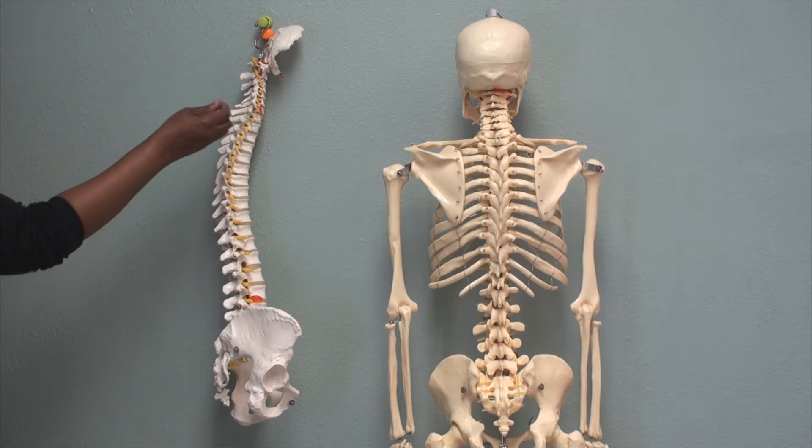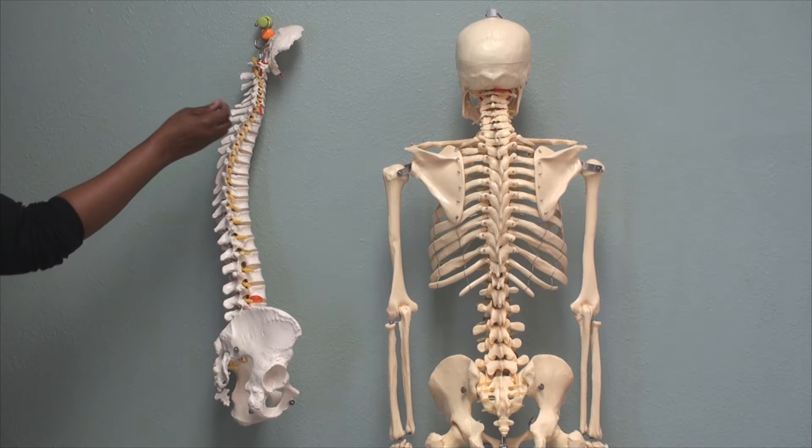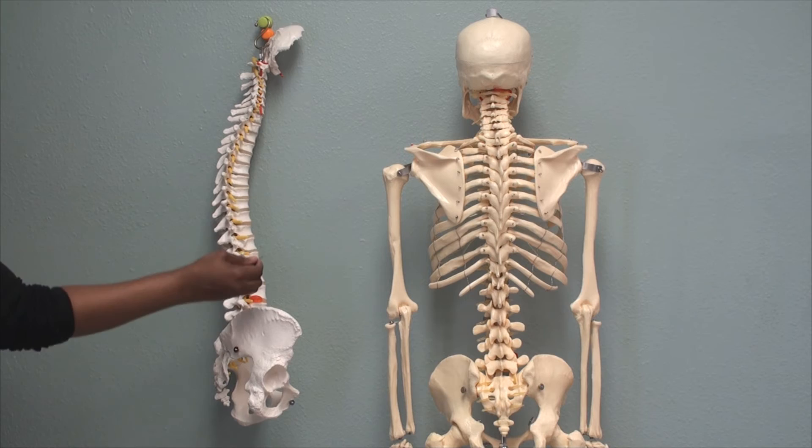The cervical and the lumbar vertebrae are anteriorly convex — they're rounded out. The purpose of the primary and secondary curvature is to increase strength, stability, and mobility of the vertebral column.